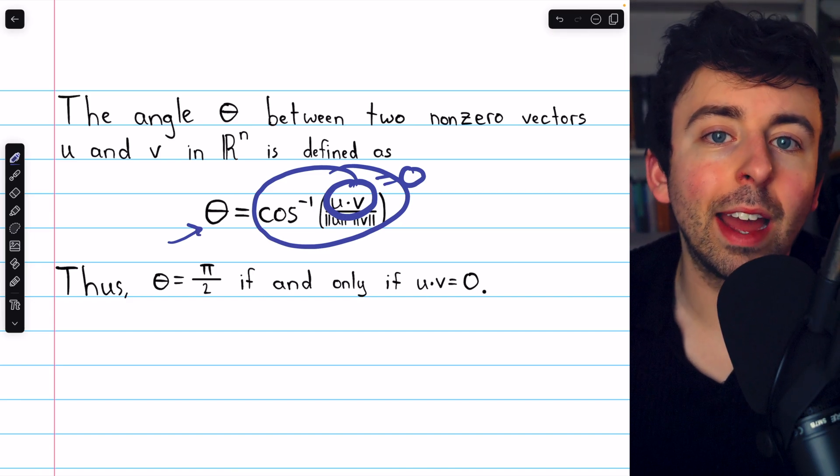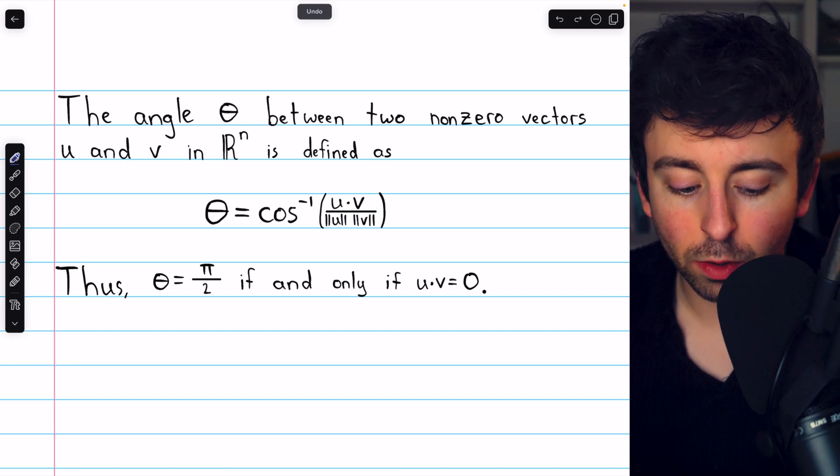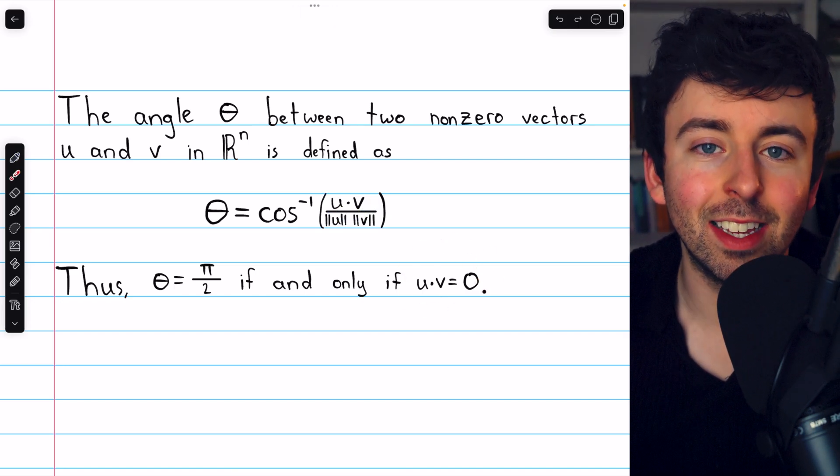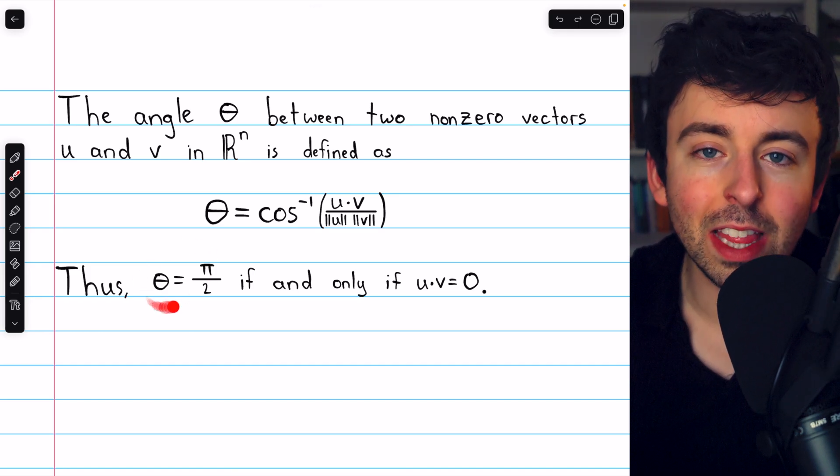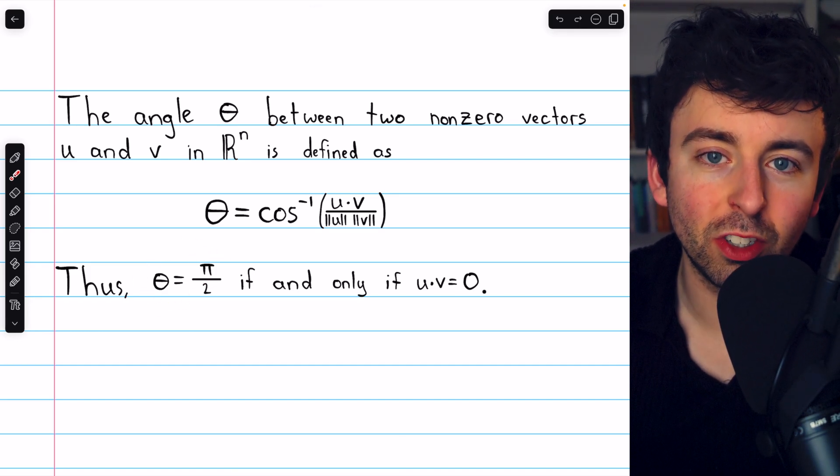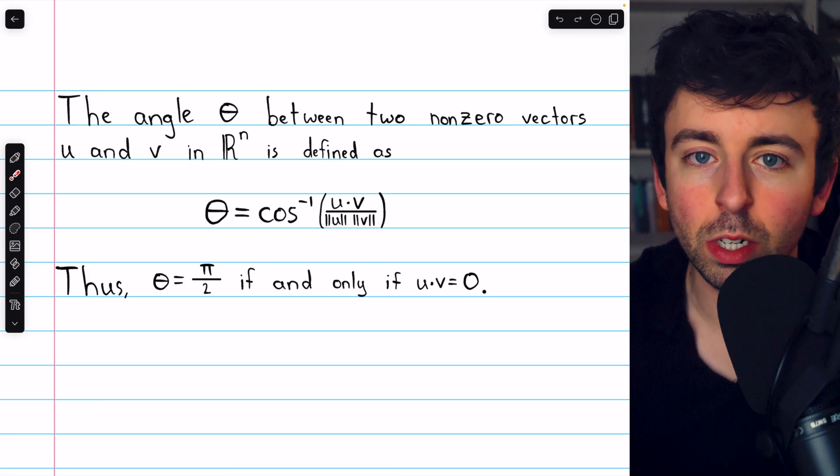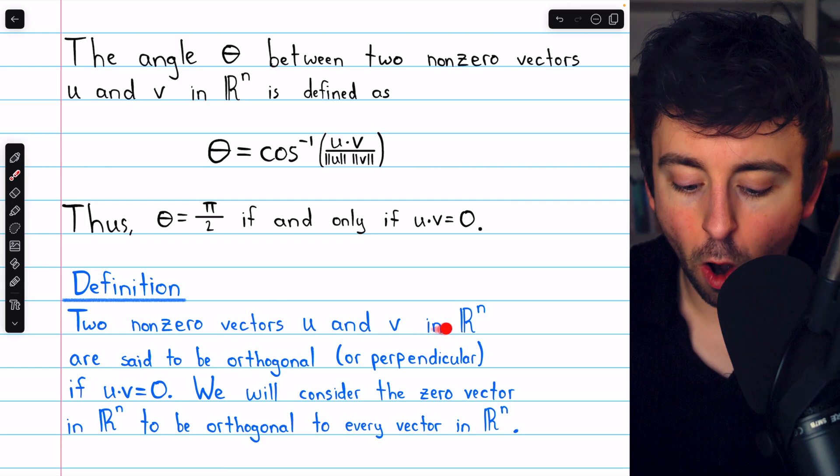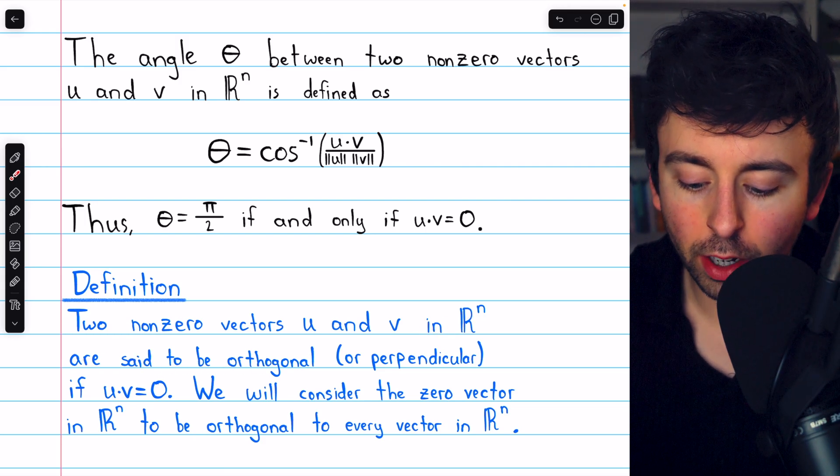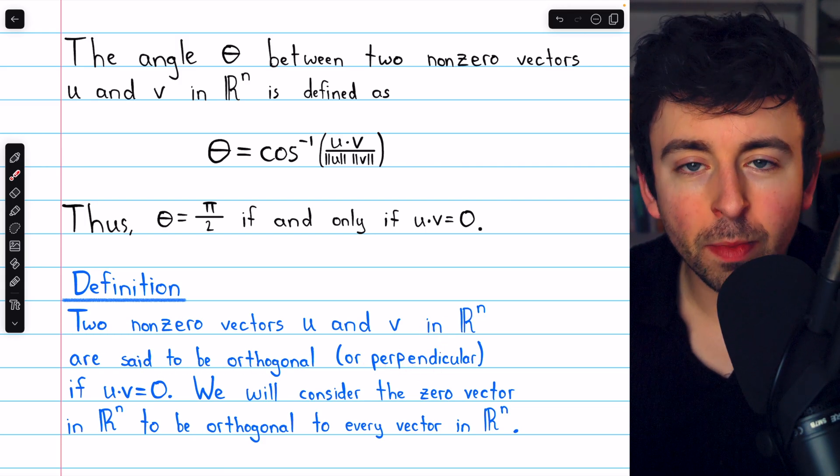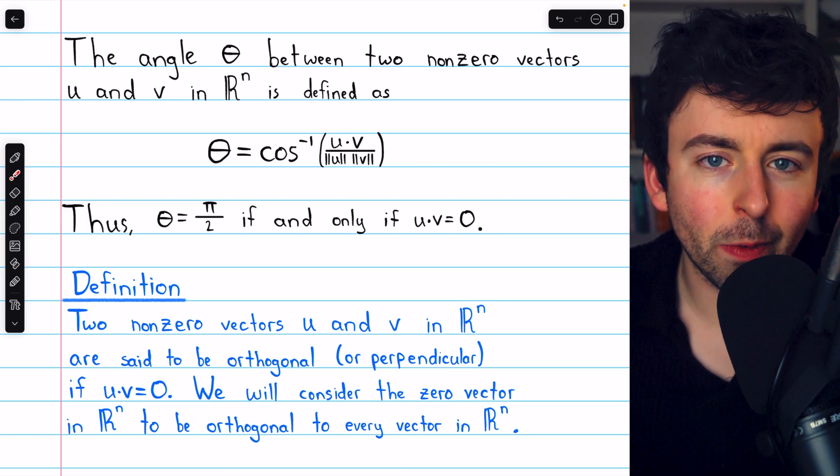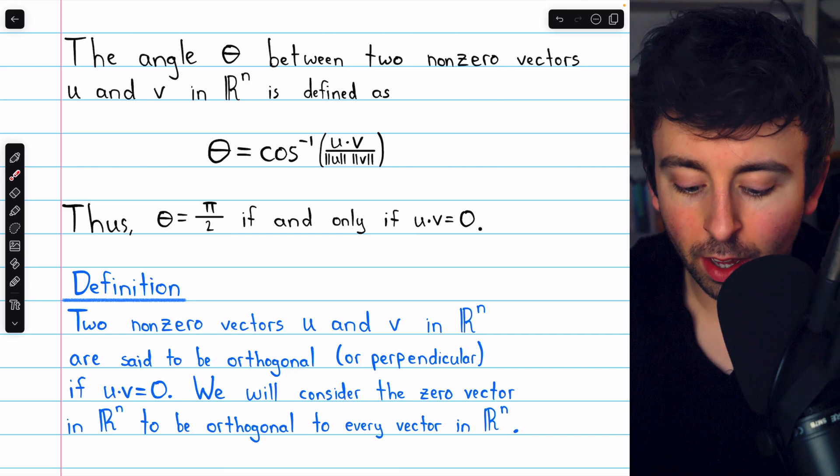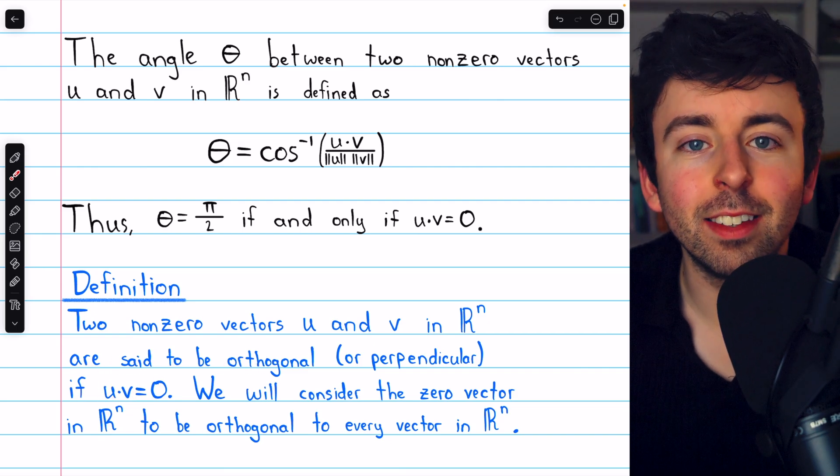And that's how we define orthogonal vectors in Rn. The vectors are orthogonal if and only if their dot product is 0. That's equivalent to the angle between them being pi over 2, which means orthogonal as we traditionally think of it. So here's our definition. Two non-zero vectors in Rn are said to be orthogonal or perpendicular, although usually we'll use orthogonal in general. Perpendicular is often just reserved for lines. We say they're orthogonal if their dot product is 0.